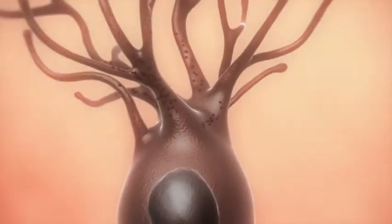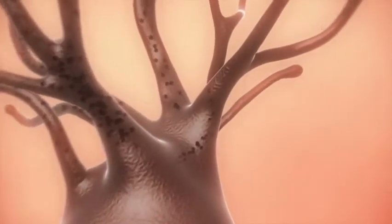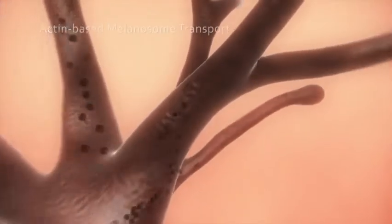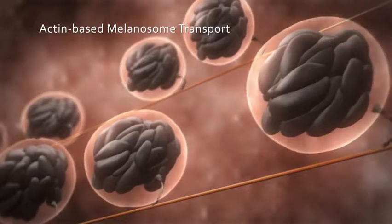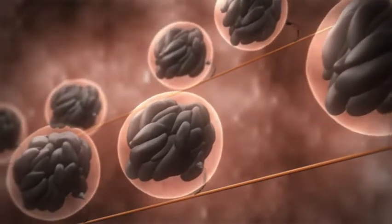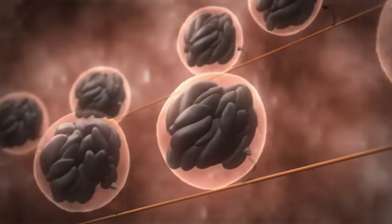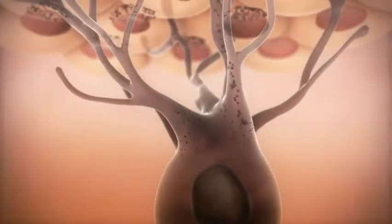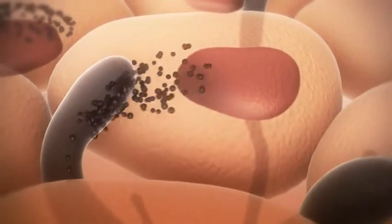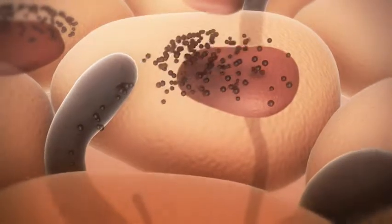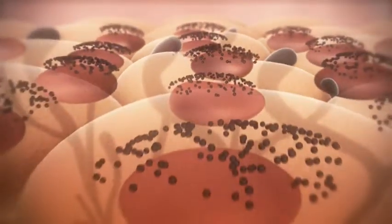When melanosomes mature, they are transported to the dendritic tip by a protein complex made up of three subunits: Rab-27A, Myosin-5A and Melanophyllin. Melanosomes are then distributed into the keratinocytes and accumulate in the cytoplasm, resulting in pigmented skin.